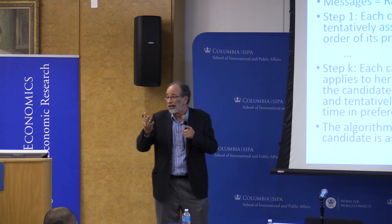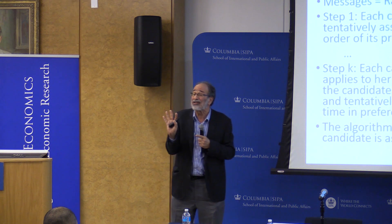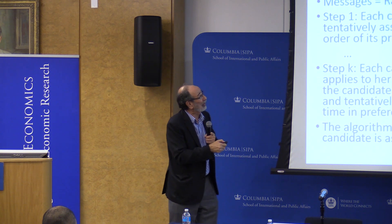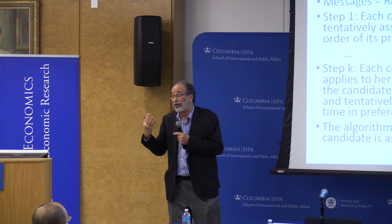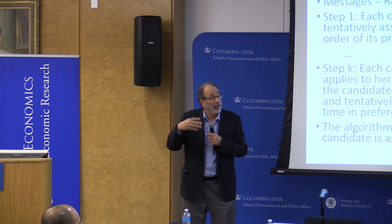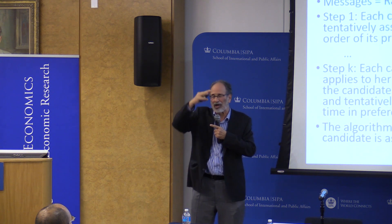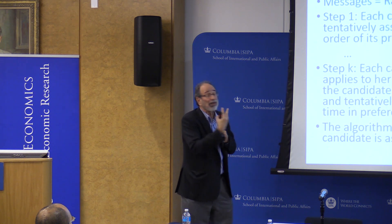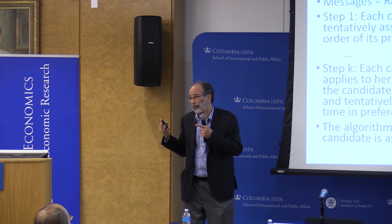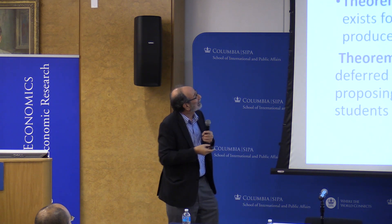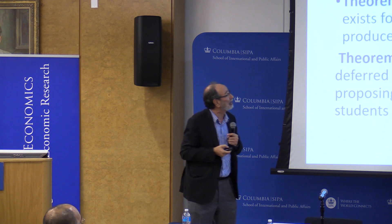The deferred acceptance algorithm has every candidate apply to their first choice. Programs order applications by preference and reject those in excess of their positions, but hold rather than accept the others — hence 'deferred acceptance.' After rejections are issued, everyone rejected applies to their next choice. Programs look at all applicants without prejudice about when they applied, keep the top ones, reject the rest. This continues until no more rejections, at which point the programs accept the applications they're still holding.